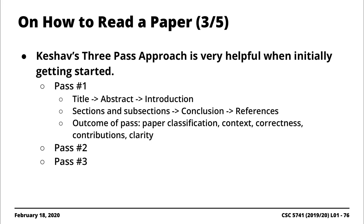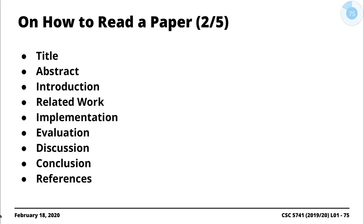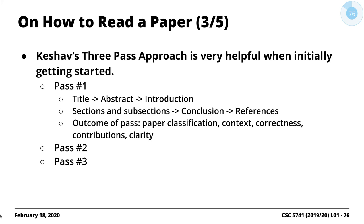You also read the headings of the sections and subsections. Sometimes they might not be labelled as 'related work' or 'evaluation' — it might be labelled differently — but that information gives you an idea of what the paper is about. It will tell you whether it's a math-intensive paper, in which case you probably have to spend a lot of time if you're not familiar with the math. You also read the conclusion, because it's relatively short and will tell you key things that came out of the paper.